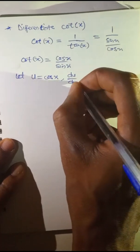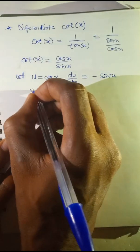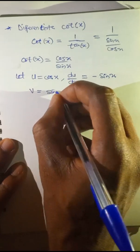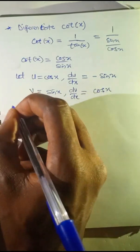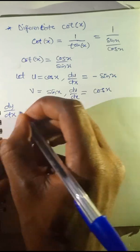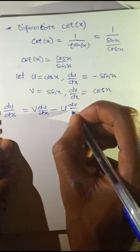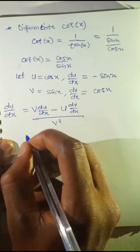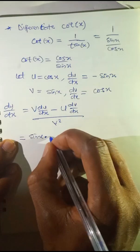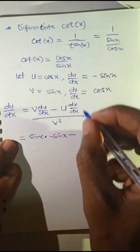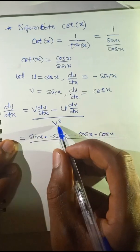Differentiating u with respect to x gives minus sine x. Let v equal the denominator, which is sine x. Differentiating v with respect to x gives cos x. The quotient rule says dy/dx equals v times du/dx minus u times dv/dx, all divided by v squared. Substituting: sine x times negative sine x, minus cos x times cos x, all divided by sine squared x.